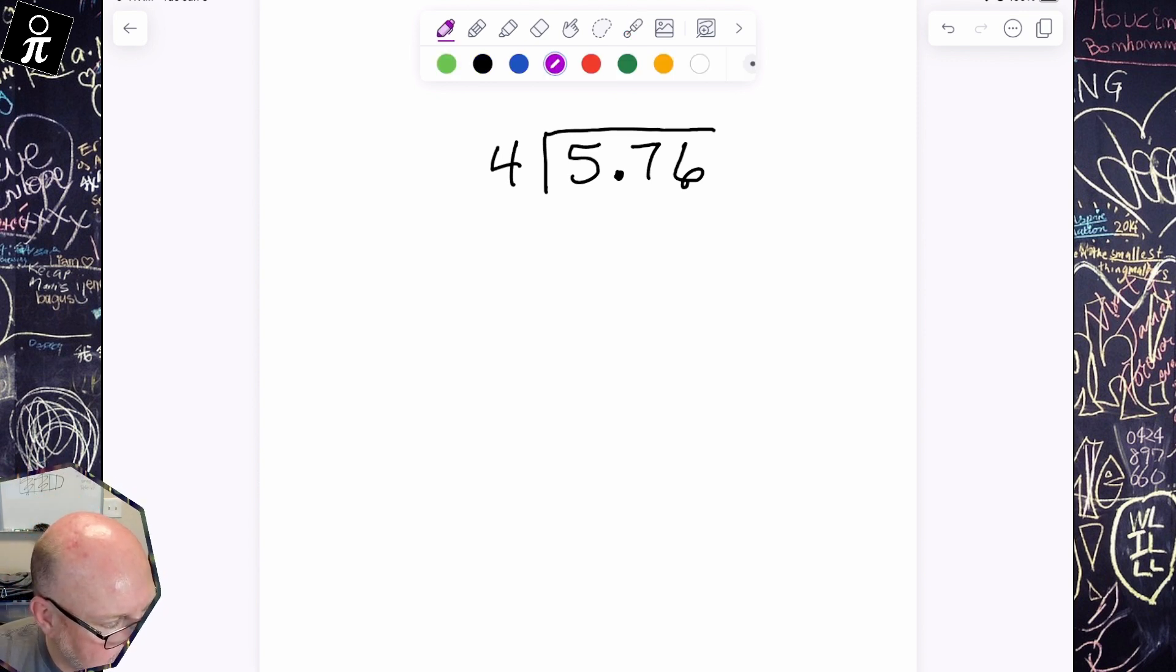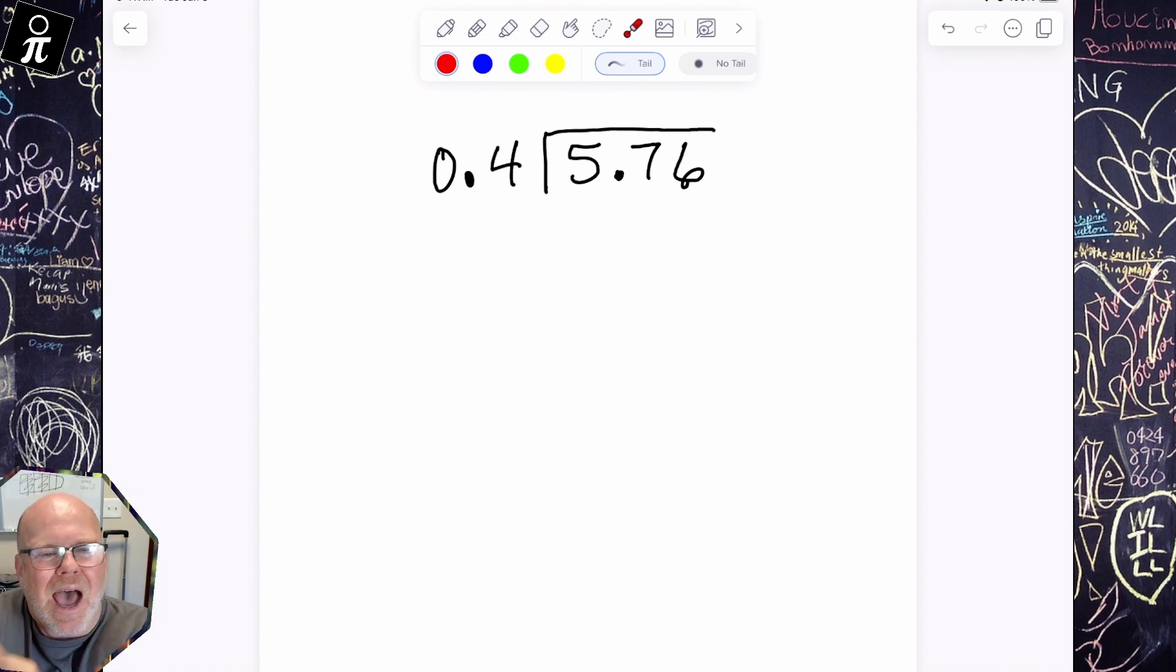What doesn't make sense is when we get 0.4, how do we take 5.76 and then cut it into 0.4 equal parts? That doesn't make sense. That's less than one part. How do we take 5.76 and divide it up into less than one part? So that doesn't make sense. So here's how we're going to make sense of this whole process.